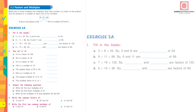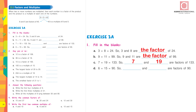Exercise 2a — fill in the blanks. 3 × 8 = 24, so 3 and 8 are factors of 24. 9 × 11 = 99, so 9 and 11 are factors of 99. 7 × 19 = 133, so 7 and 19 are factors of 133. 6 × 15 = 90, so 6 and 15 are factors of 90.